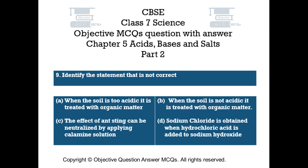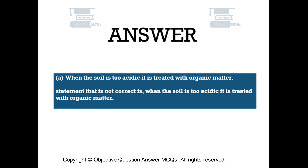Question number 9. Identify the statement that is not correct. Option A: when the soil is too acidic it is treated with organic matter. Option B: when the soil is not acidic it is treated with organic matter. Option C: the effect of ant sting can be neutralized by applying calamine solution. Option D: sodium chloride is obtained when hydrochloric acid is added to sodium hydroxide. The right answer is option A — when the soil is too acidic it is treated with organic matter is the incorrect statement.